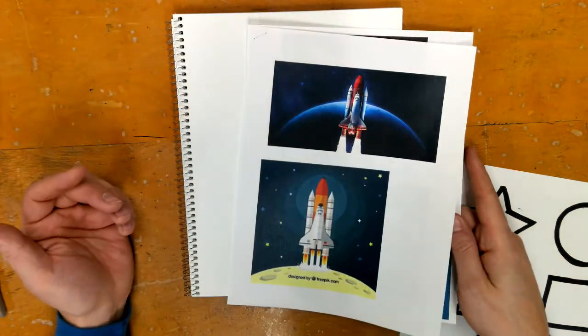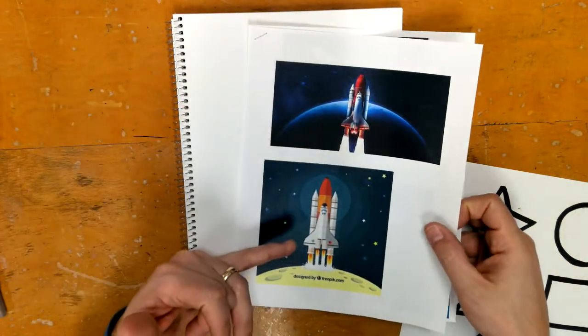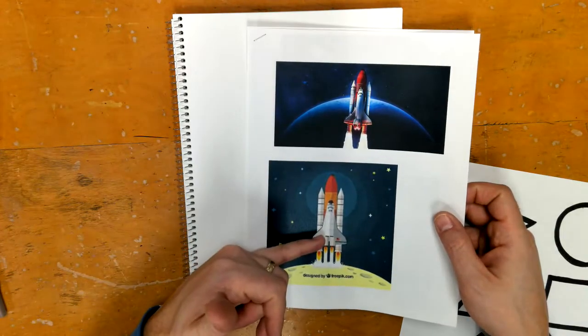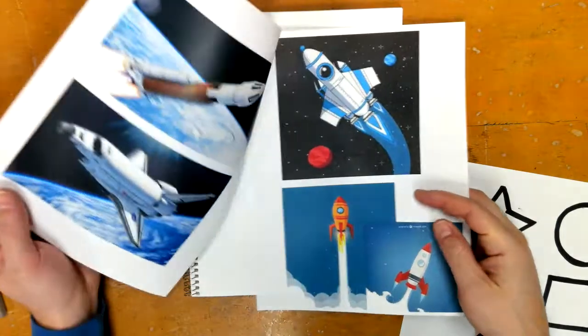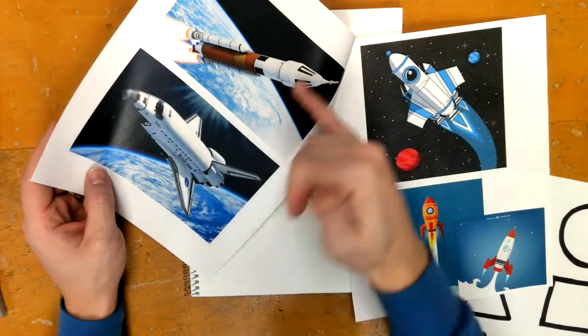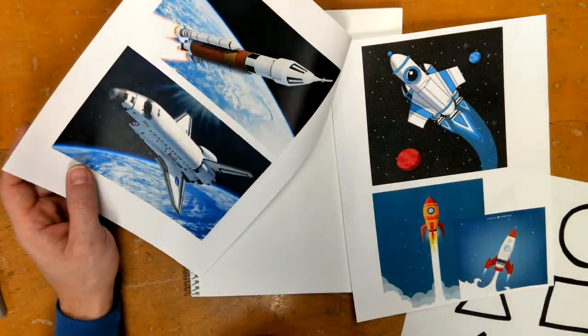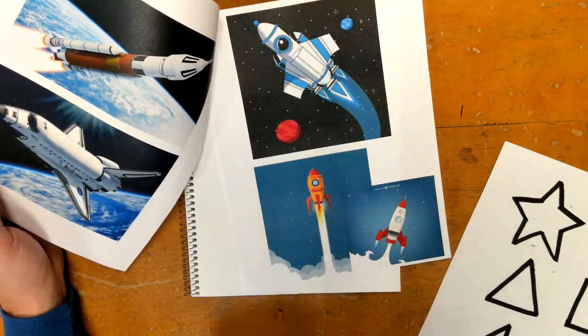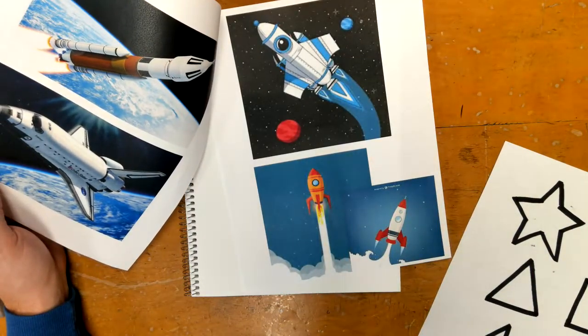So the front page is very almost a real image and then you have more of a cartoon drawing. And then same on this page, you have some real images from space and then you have more cartoony looking rockets or spaceships.